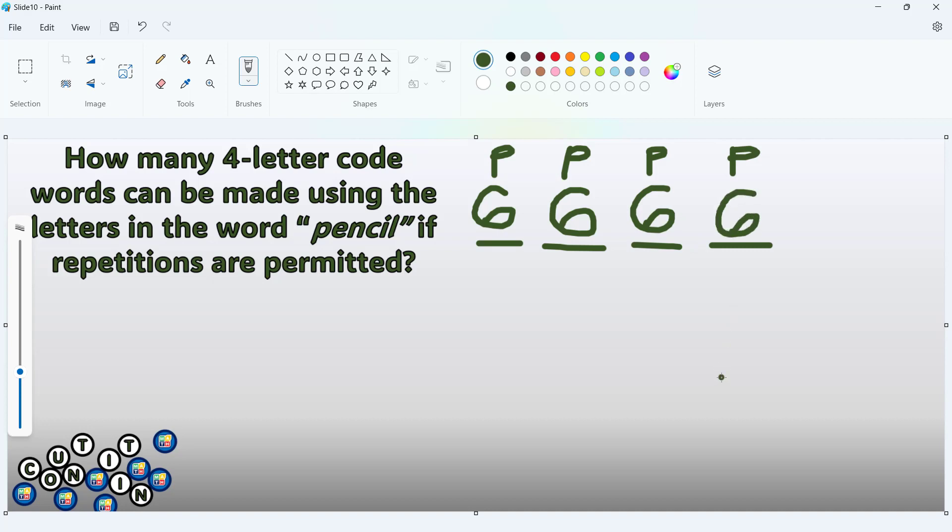There are 6 possibilities for each placement because repetitions are allowed. The fundamental counting principle allows us to multiply the number of possibilities per placement to give the result of our problem.